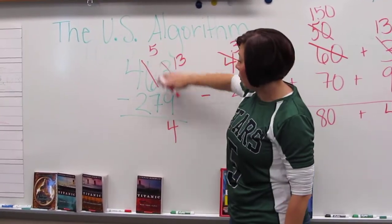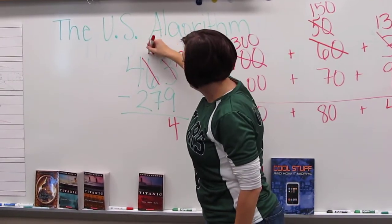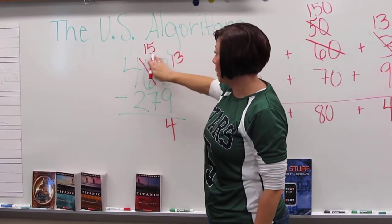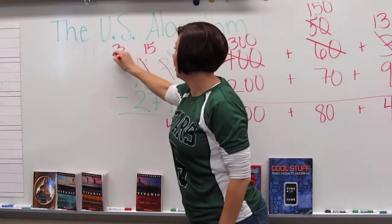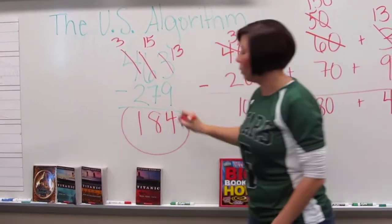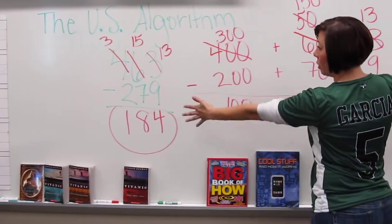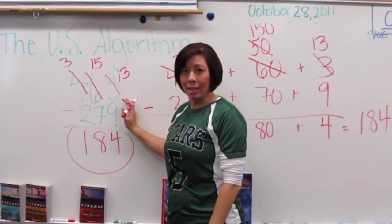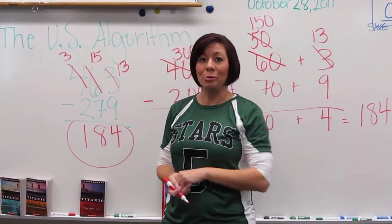Then they would look 5 minus 7, can't do that so I have to borrow some from over here which actually makes this 150 and this 300, and then they get 184. So this is the long drawn out process but we're working towards this and that's the U.S. algorithm for subtraction.